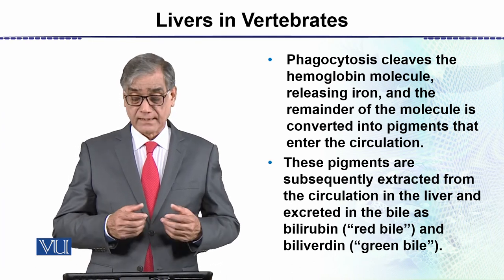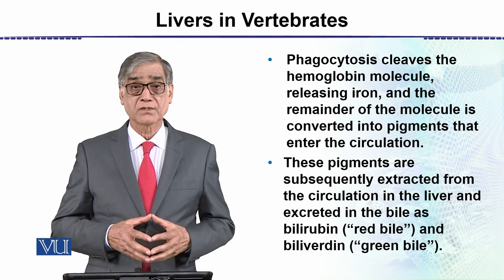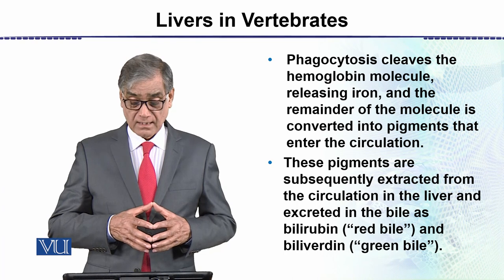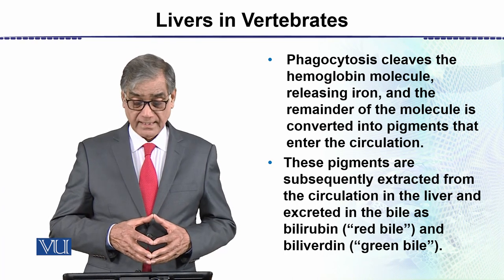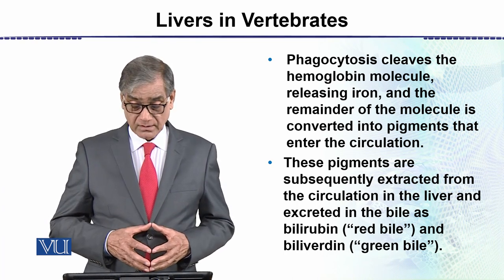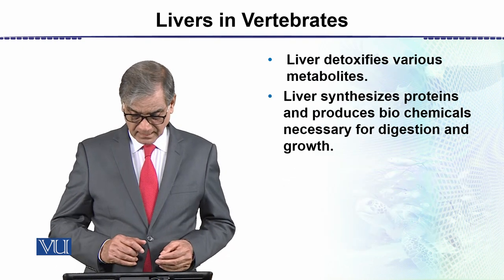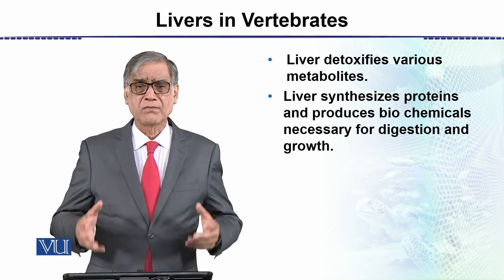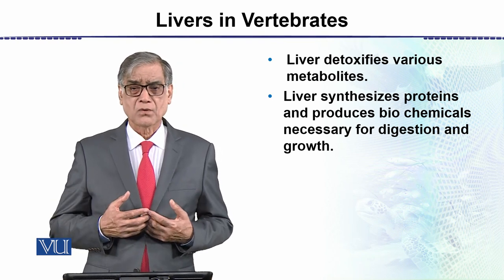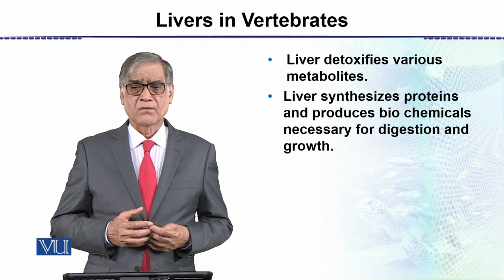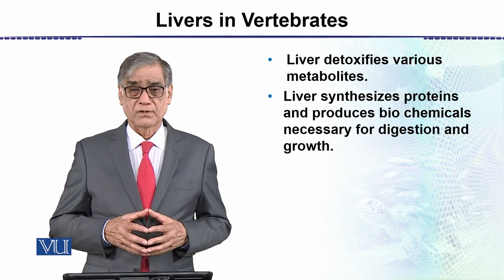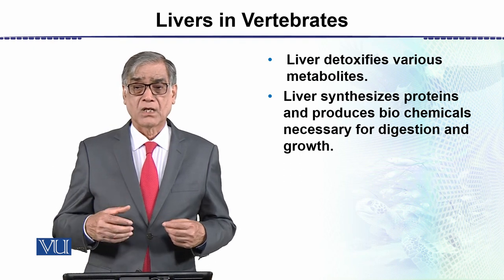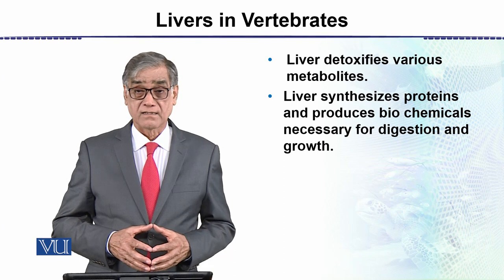These pigments are subsequently extracted from the circulation in the liver and excreted in the bile as bilirubin or biliverdin. The liver also detoxifies various metabolites, because in metabolism there are many metabolites that are toxic and need to be removed. If they are not removed, that may lead to many diseases.